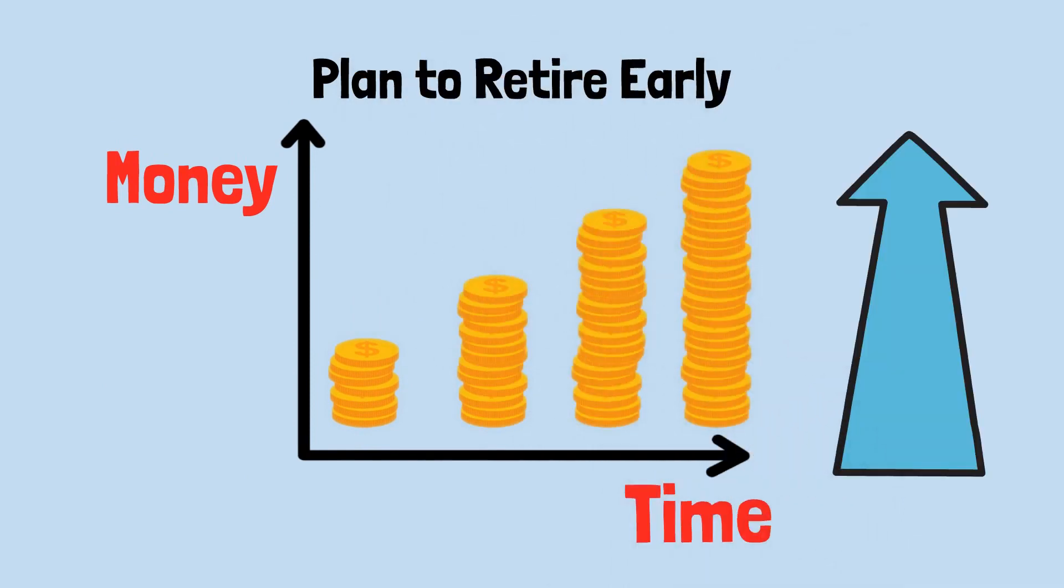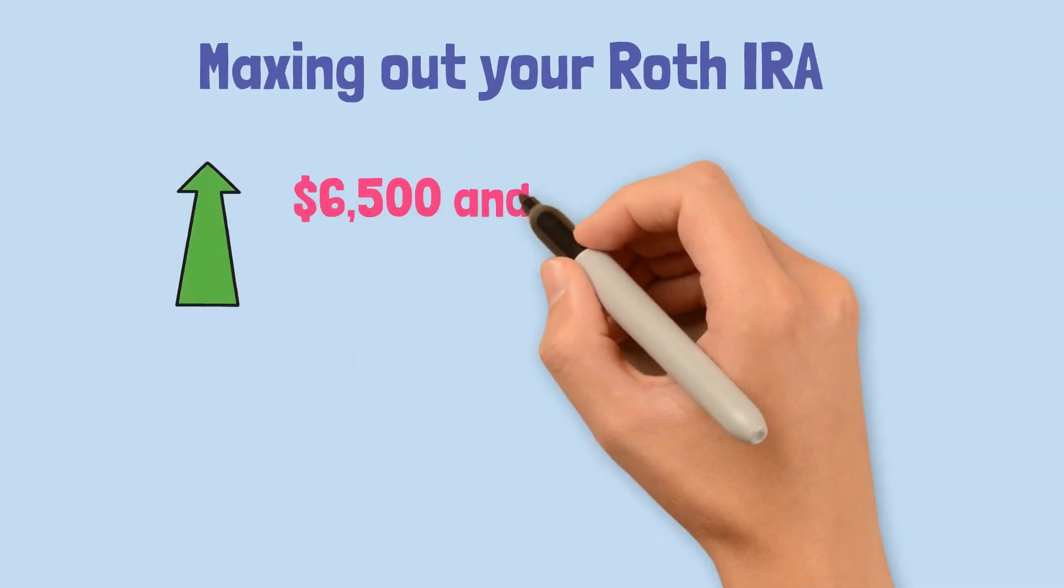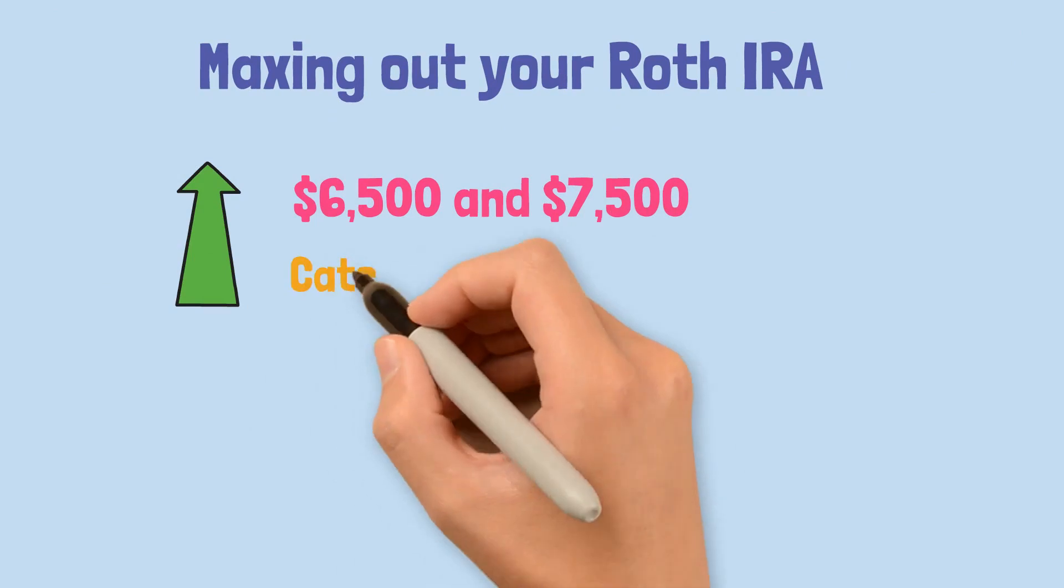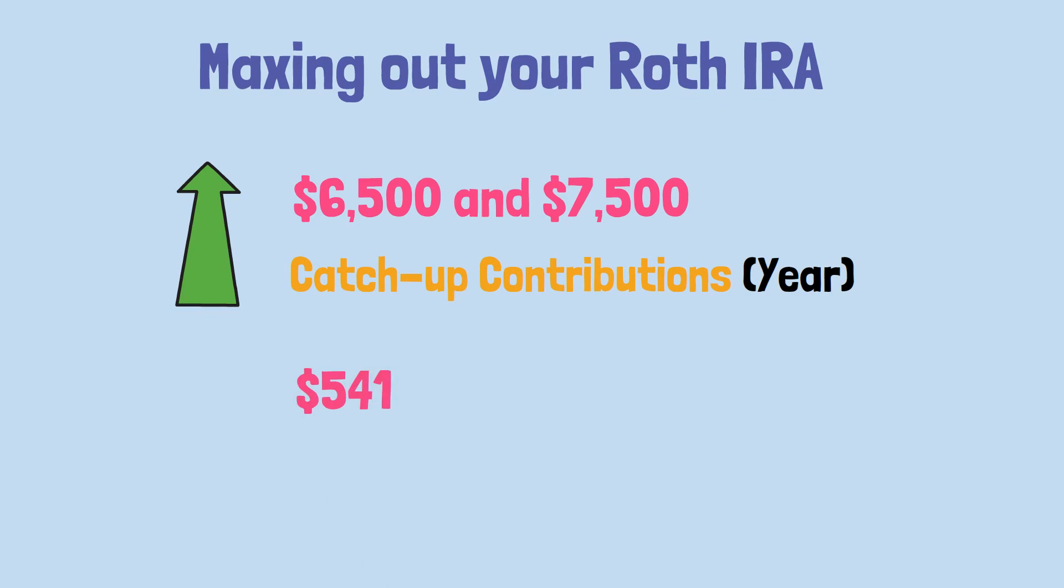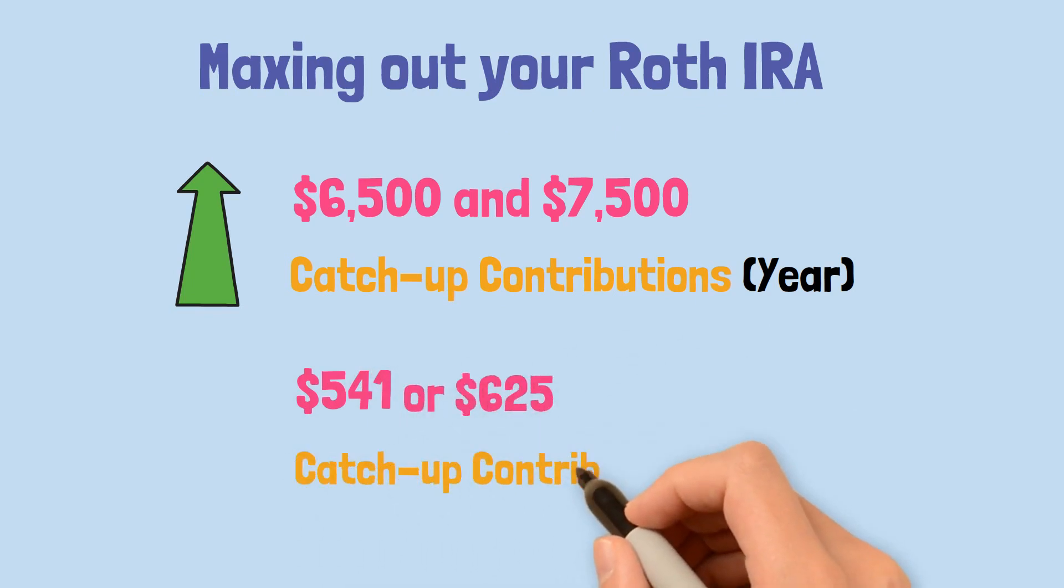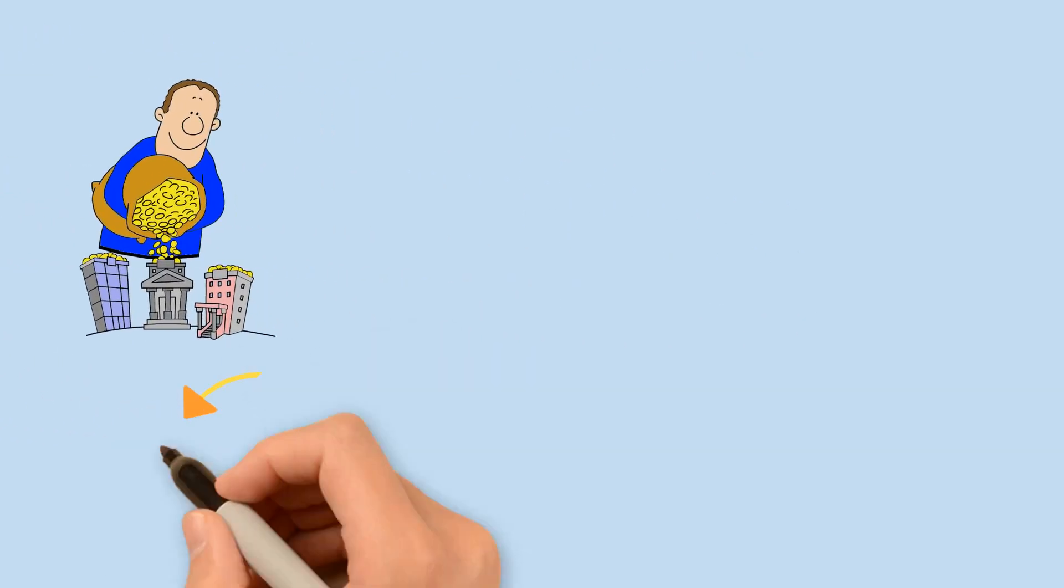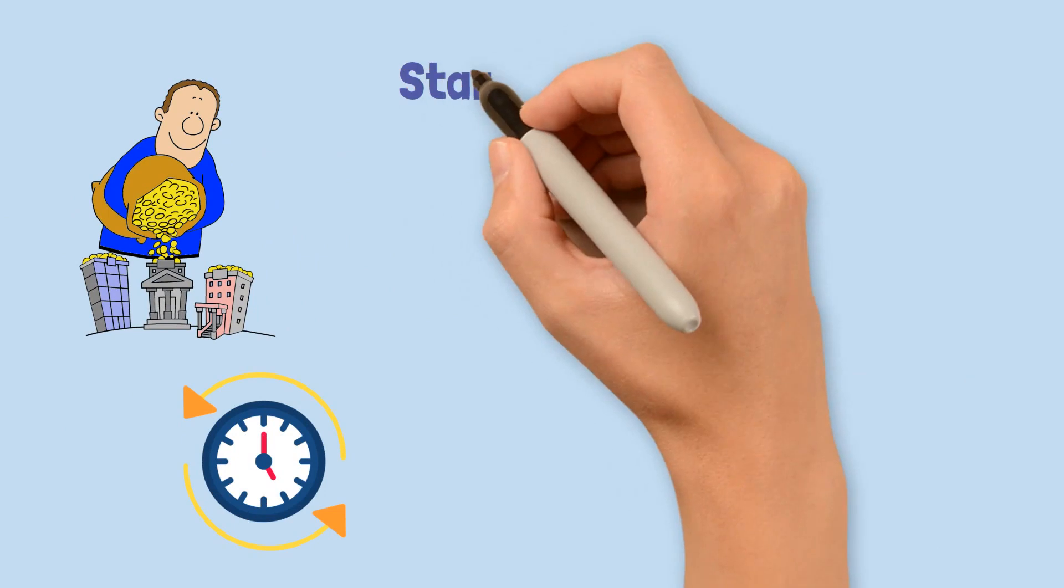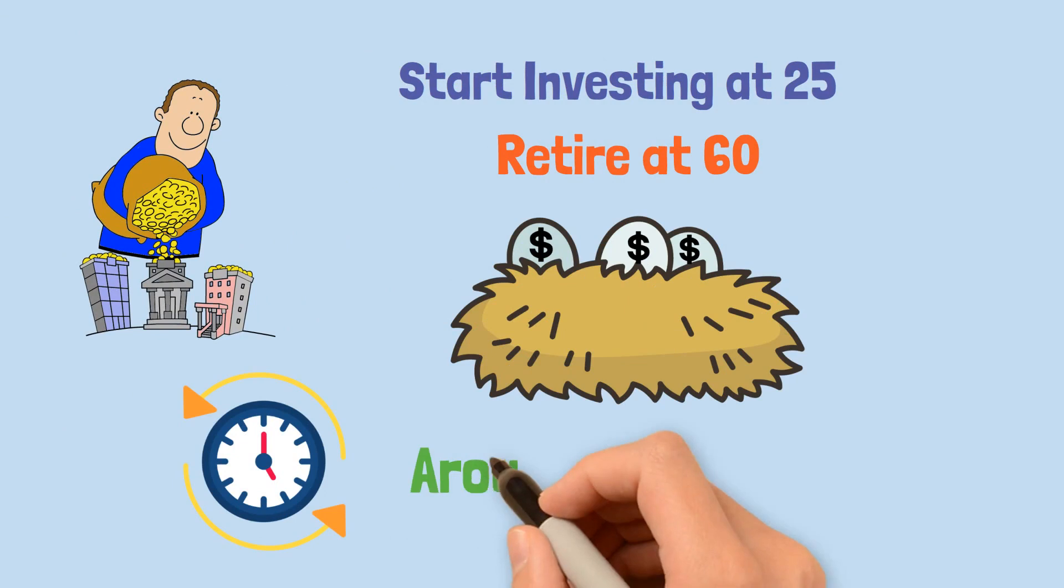If you plan on retiring earlier, you'll have less time for your money to compound, so you'll need to invest more than $300 a month. You could consider maxing out your Roth IRA, which is now increased to $6,500 and $7,500 for catch-up contributions in the new tax year, which roughly equates to $541 or $625 for catch-up contributions per month. By investing in the same manner as the lazy way, but starting at age 25 and retiring at age 60, you could have a nest egg of around $1.8 million.